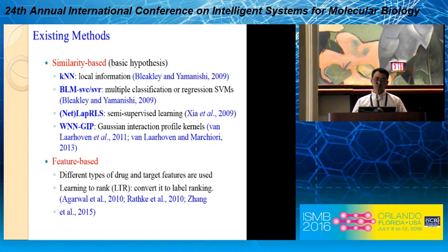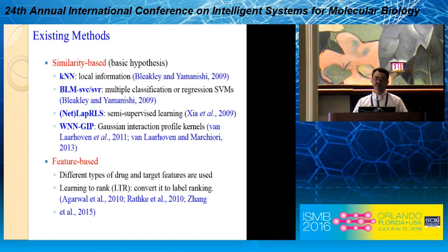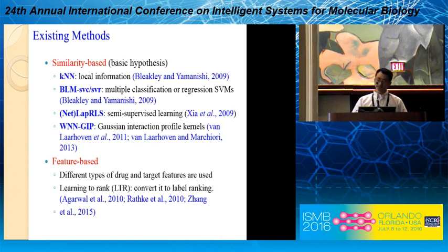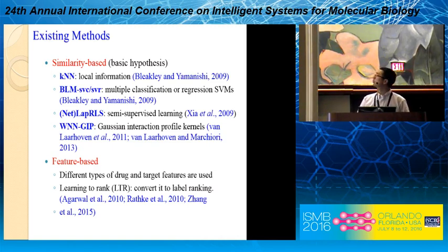There are also some feature-based methods. In this case, different types of drug and target features are used to train classifiers. Most recently, learning-to-rank methods have also been proposed to tackle this problem, where it is converted into a label-ranking problem.